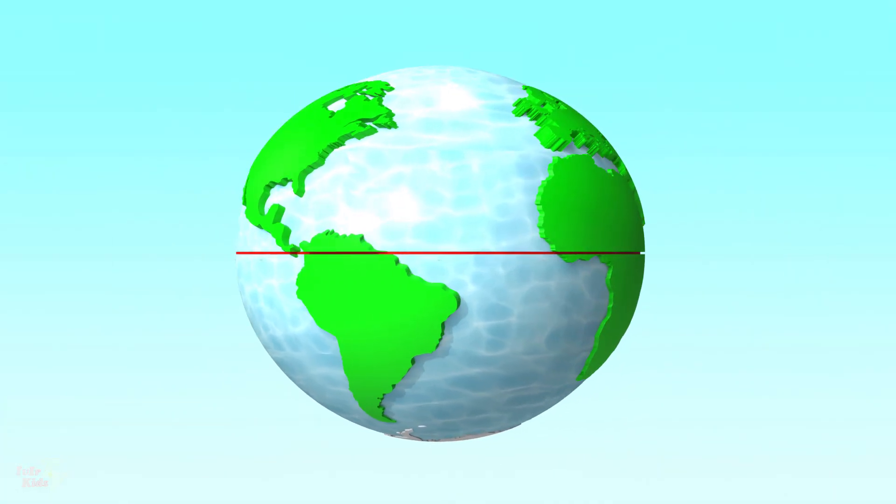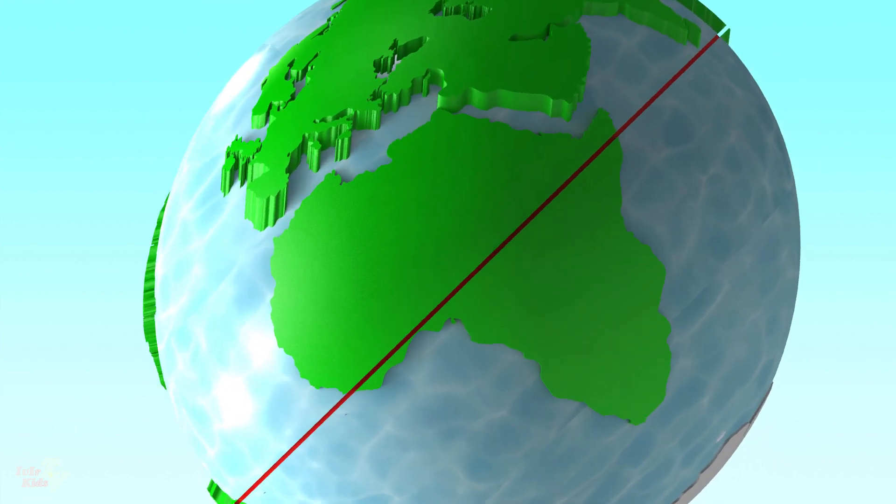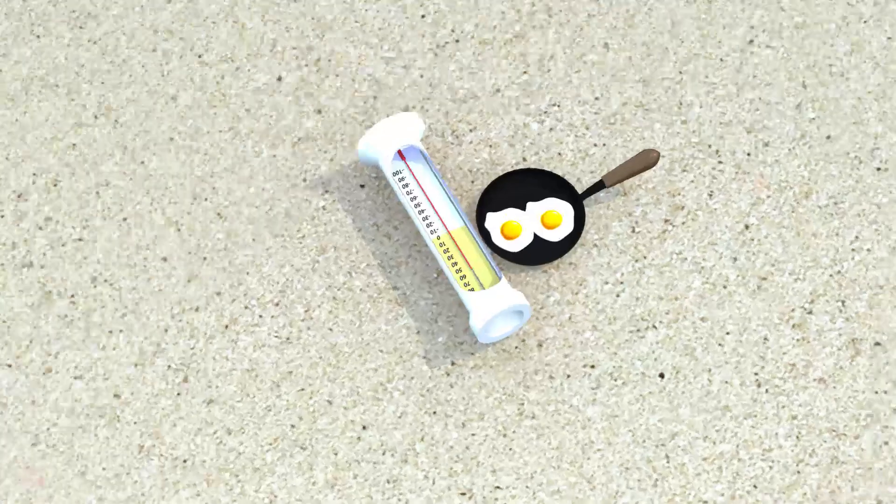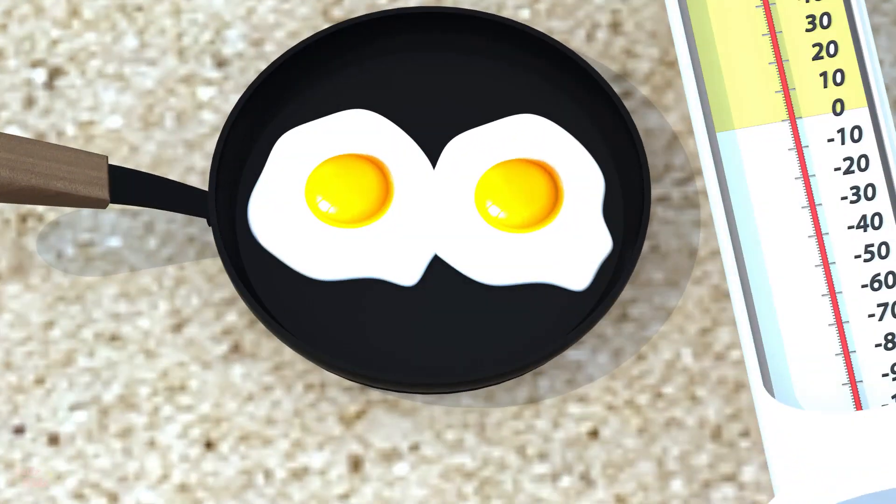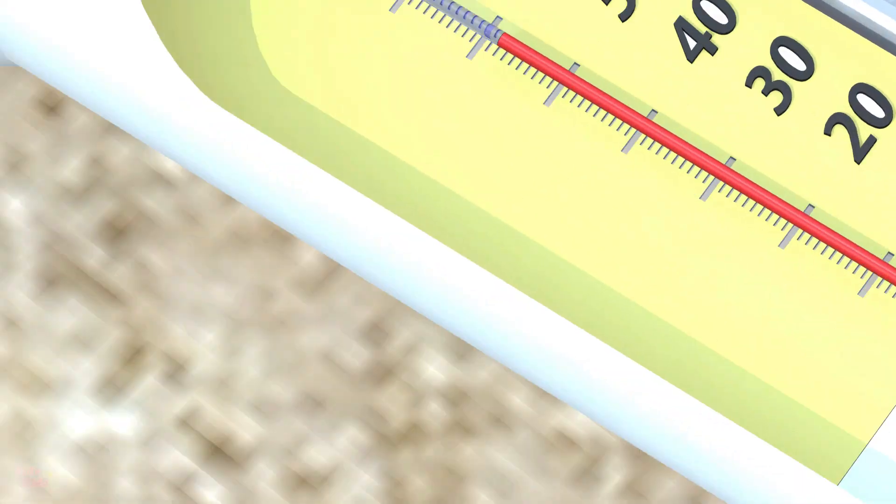On Earth there are places where it is very very hot. The highest temperature was recorded in the Sahara Desert, 57.7 degrees.